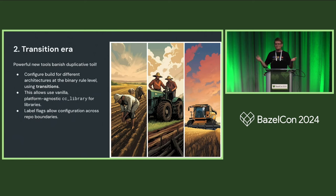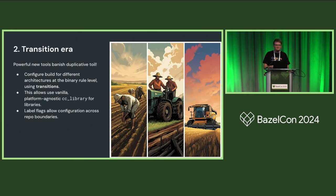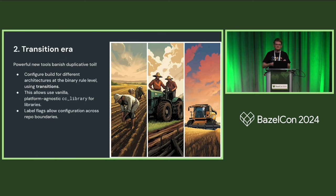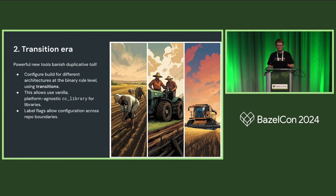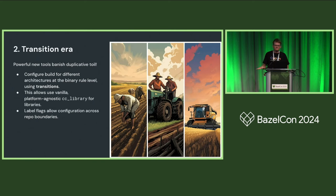In the transitional era, we came up with better ways of building embedded software using things like transitions at the binary rule level. The idea is we're not going to have custom project-specific library targets — we're just going to use vanilla CC library. But if we're only using vanilla CC library, where do we inject special information about project-specific architectures or compiler flags? We do it at the level of the binary rule: we'll still have custom binary rules, but not custom library rules anymore. We also use label flags for flexible configuration of dependencies.